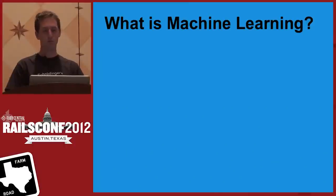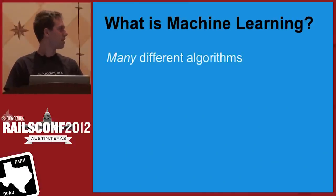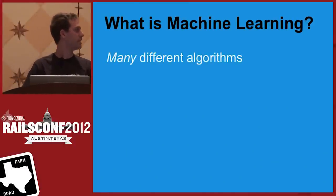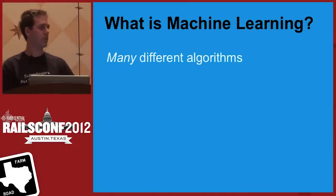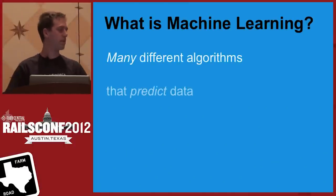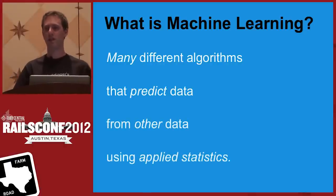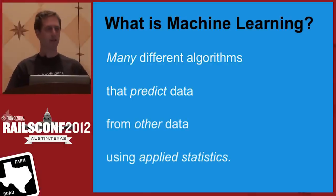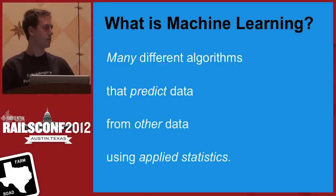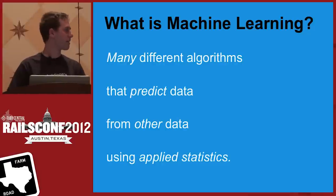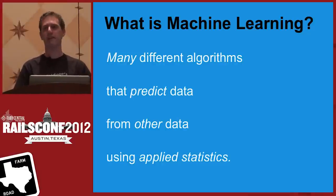So what is machine learning? Machine learning is many different algorithms that predict data from other data using applied statistics. At its core, machine learning is applied math, but there are a lot of libraries available that abstract that math away from you.